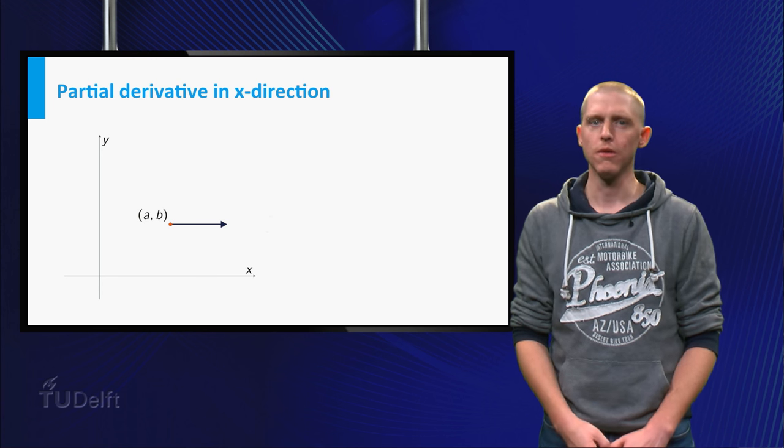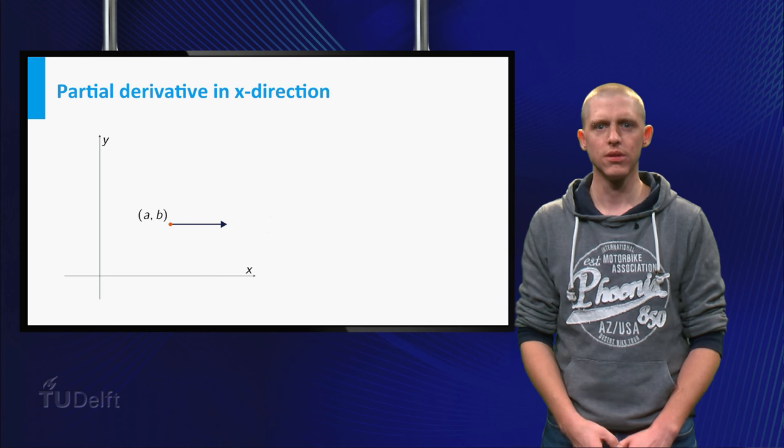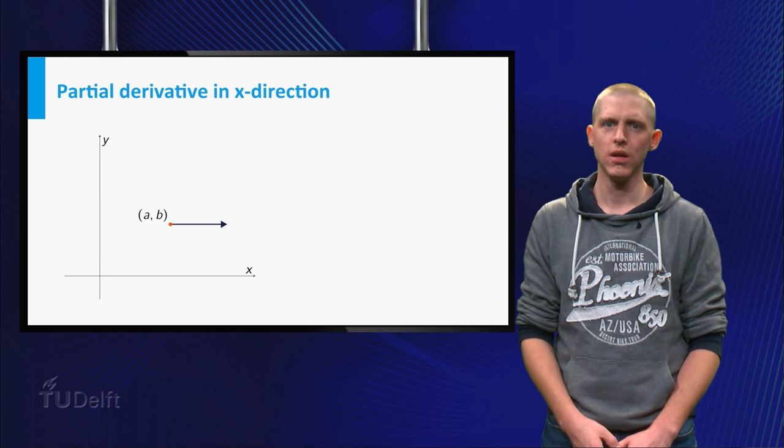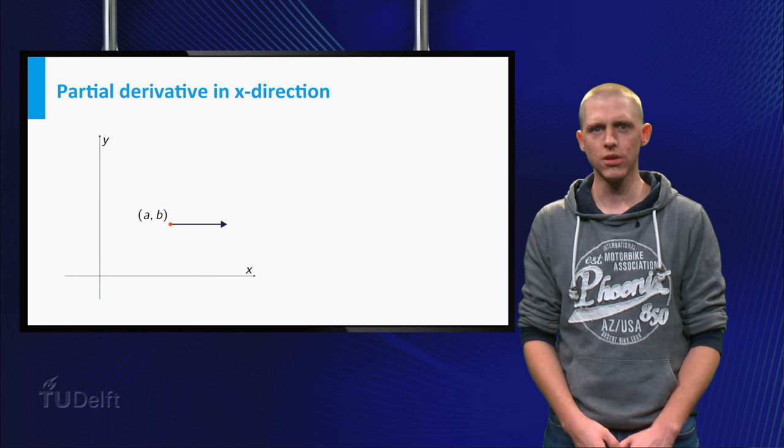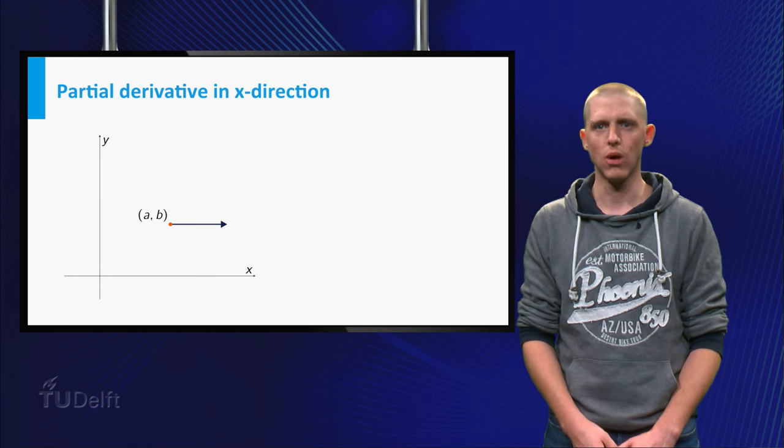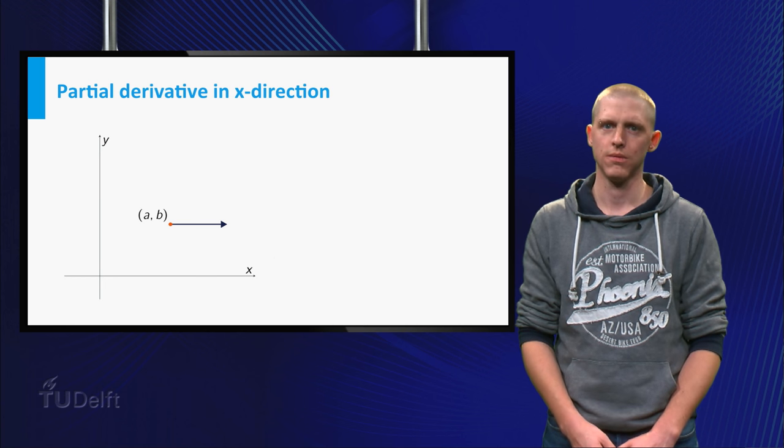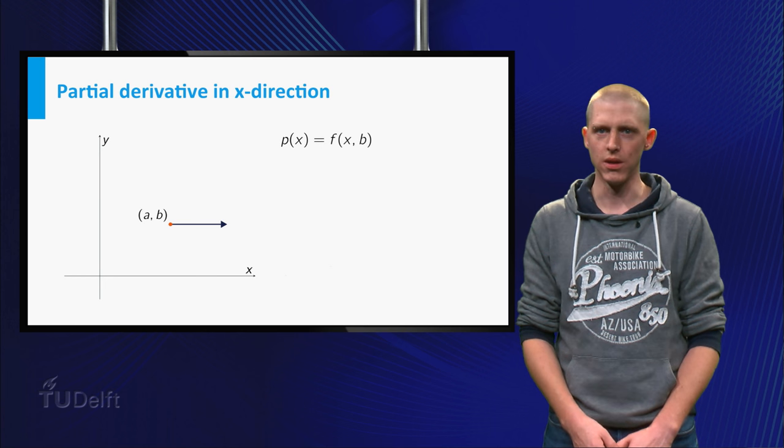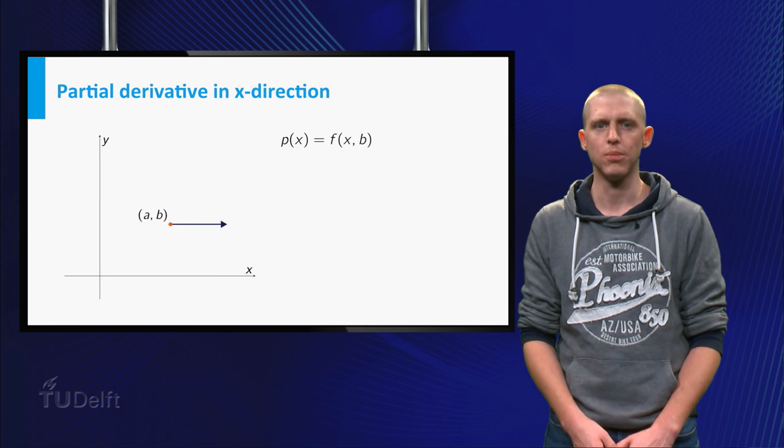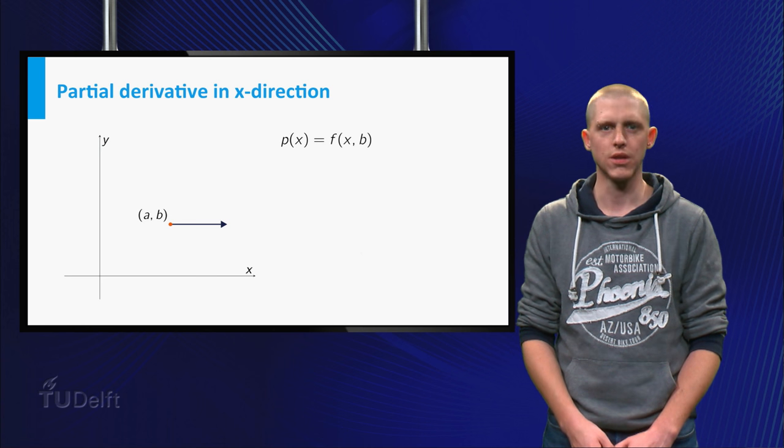When (x,y) moves away from (a,b) in the x-direction, the function f(x,y) is in fact a function of one variable only, because y equals b is fixed. Let's denote this function by p. So p is a function of x, defined by p(x) = f(x,b).